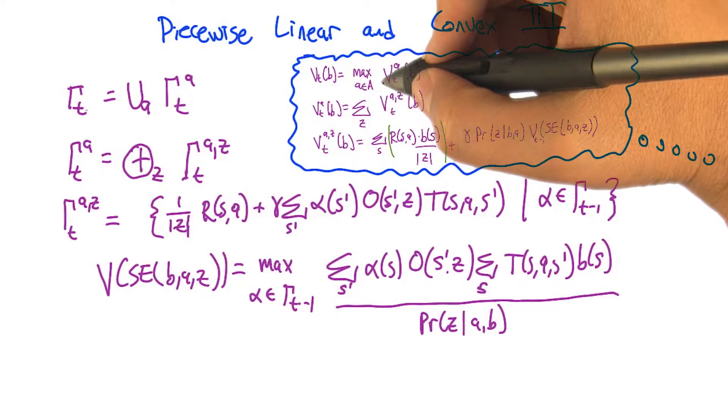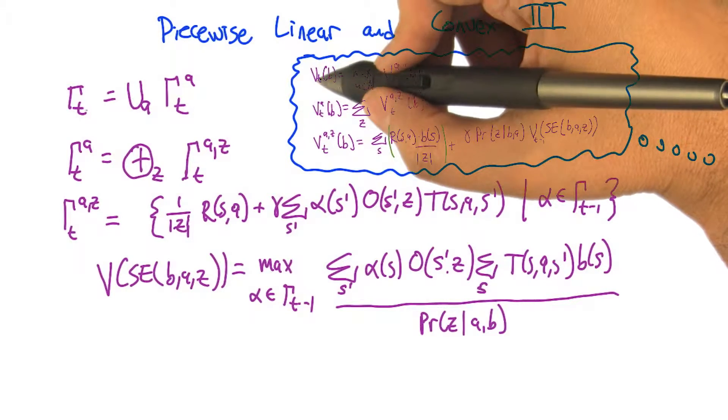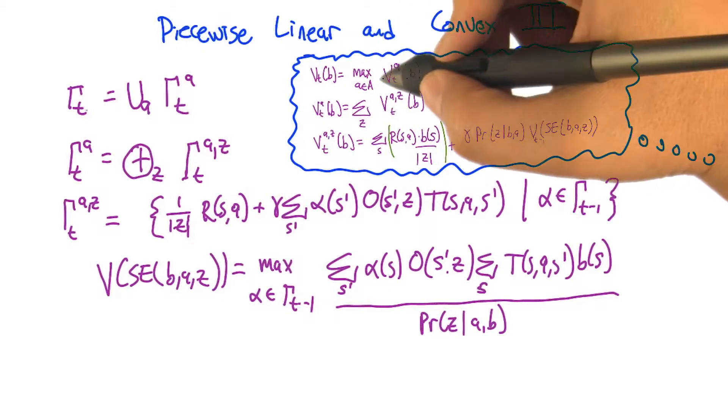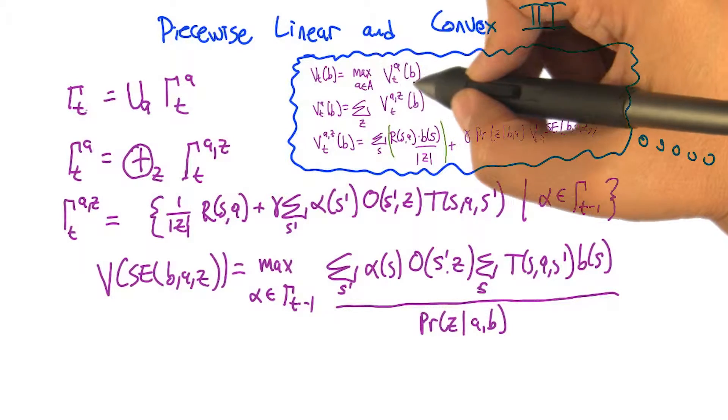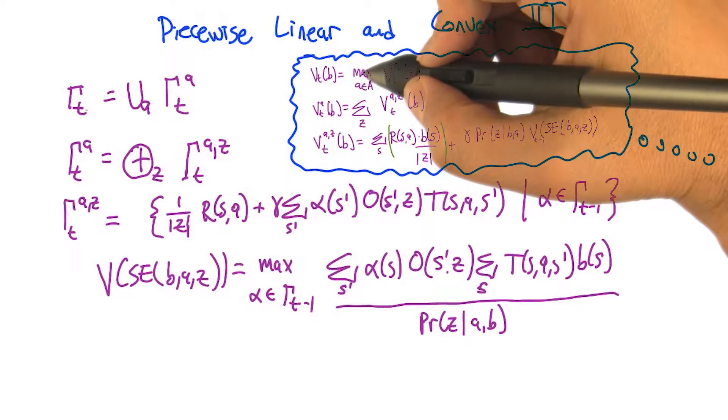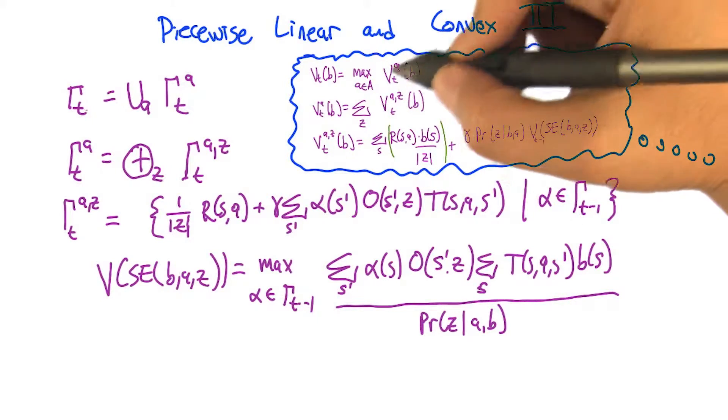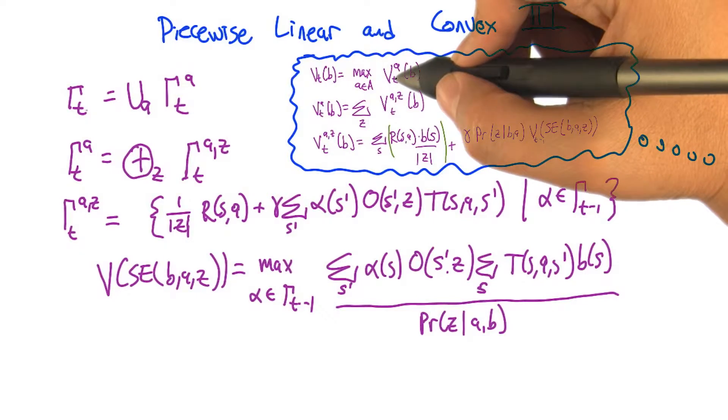So the easiest one is the very first one. The first one says that the value function at time step t is the max over actions of some other kind of thing. If this is represented as the max of a bunch of dot products over belief states, then think about what happens if you just take all the vectors for all the different actions and throw them into one big bag.